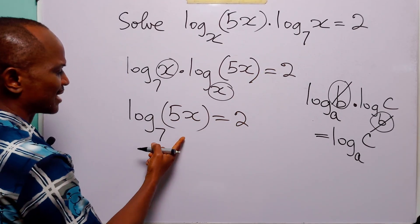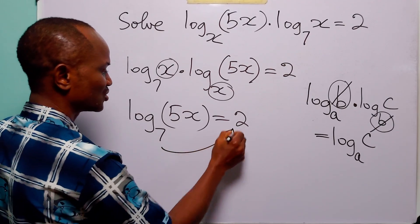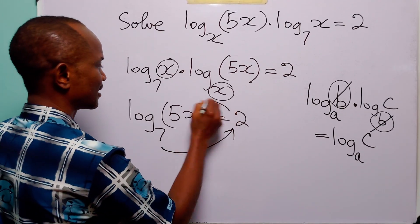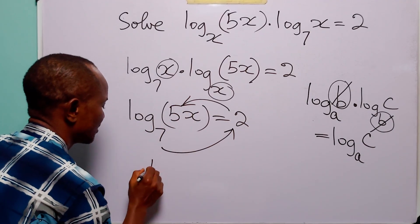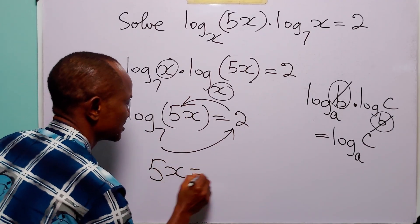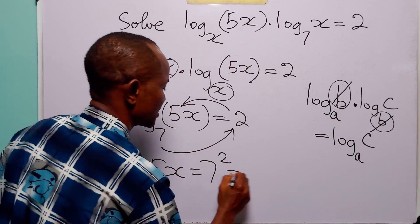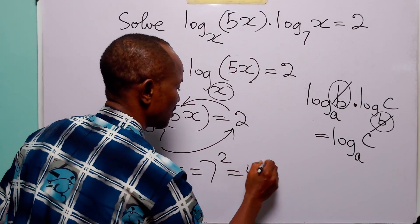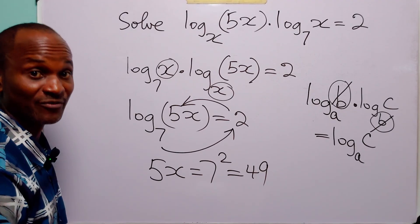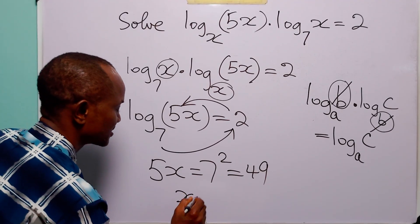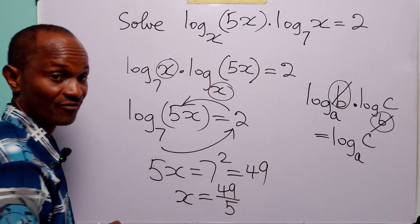Now remember that log base 7 of 5x equals 2 simply means that 7 to the power 2 is equal to 5x. So 5x equals 7 squared, which is 49. Dividing both sides by 5, we have x equals 49 over 5.